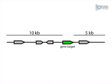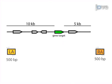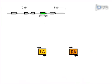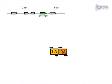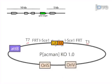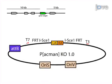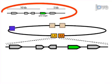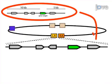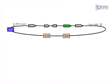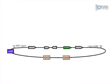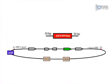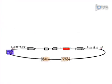This is accomplished by first selecting a BAC clone covering the genomic region of interest. The second step is to clone homology arms into a homologous recombination vector. The third step is to clone genomic DNA into the homologous recombination vector using gap repair. The final step is to replace the genomic region with the targeting cassette.